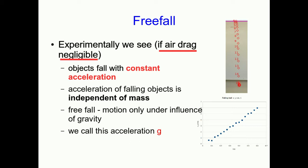The acceleration of falling objects that's mass independent we call g, and that's the acceleration due to gravity. The acceleration due to gravity varies a bit from place to place, but it's about 9.8 meters per second squared.